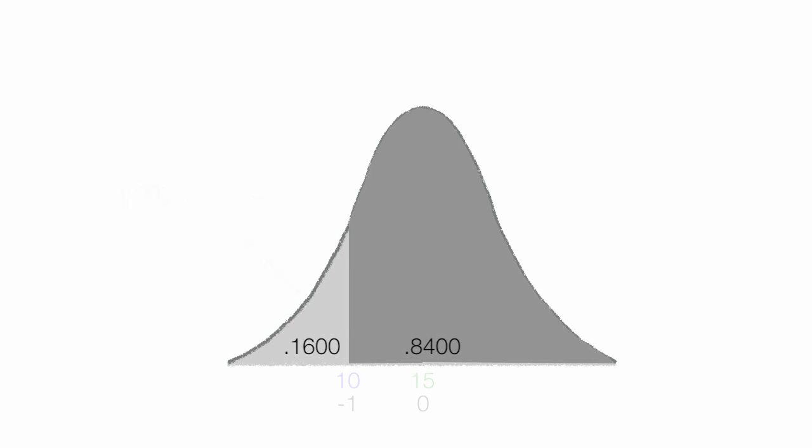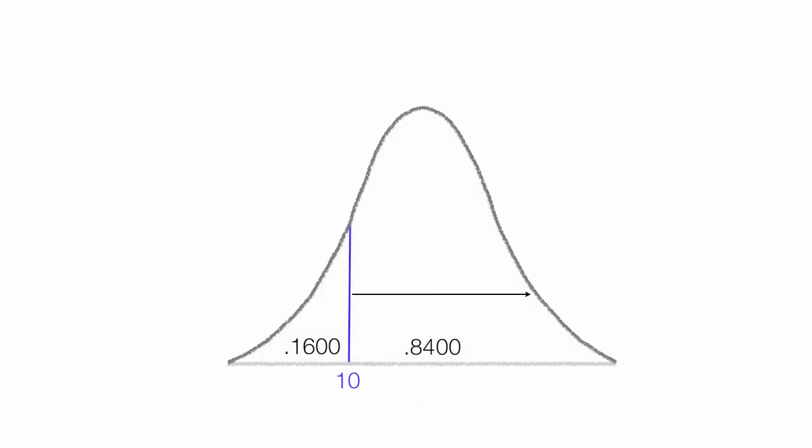So an observation being more than 10 is 0.8400, that area there. An observation less than 10 is that area there, which is about 16%.